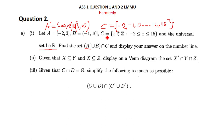Welcome to today's tutorial. I'm going to help you solve question 2 from your assignment which you recently submitted. The question gives sets A, B, and C with the universal set being the real numbers, and asks you to find A complement union B, intersect C, and then display it on the real line. You can start by displaying on the real line first, or find the answer first and then display it.